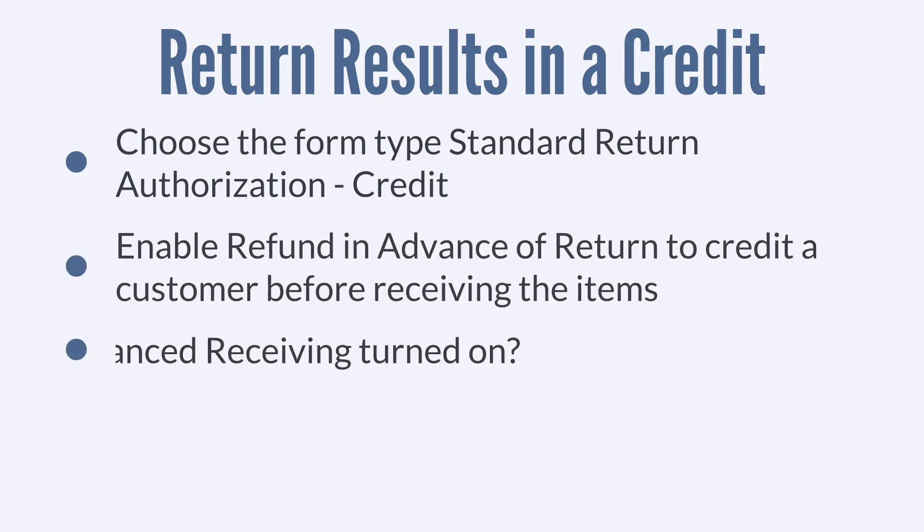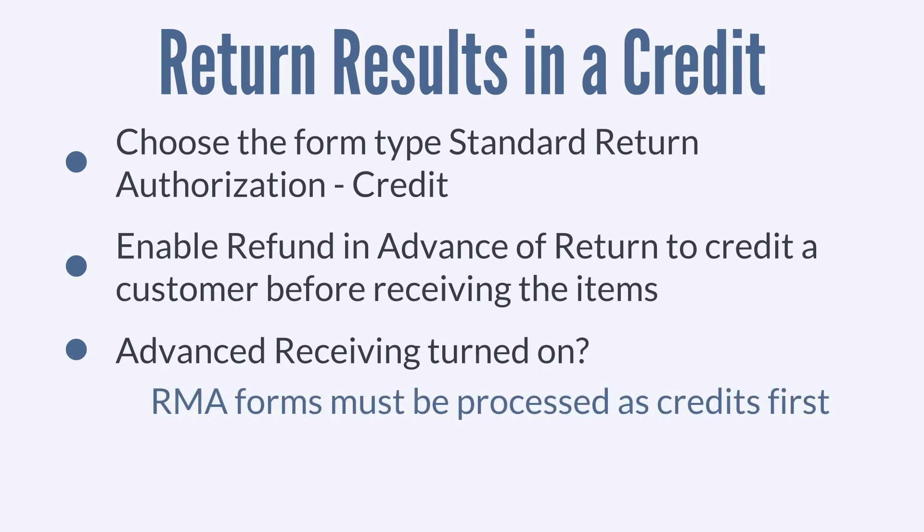If the advanced receiving feature, located under the transactions tab of enable features, is turned on, then you will no longer have a choice about whether the return authorization form will result in a cash return or a customer credit. When advanced receiving is turned on, all RMA forms must be processed as customer credits before a refund can be issued.